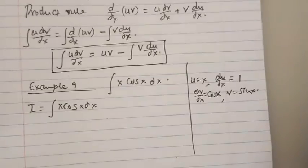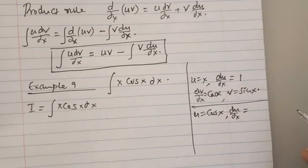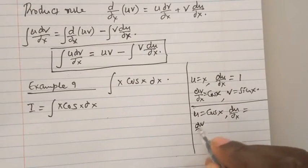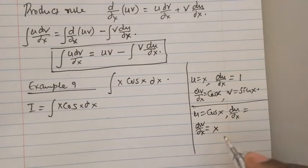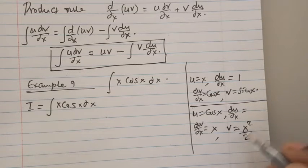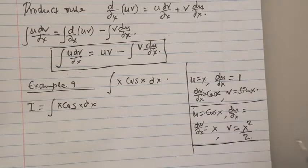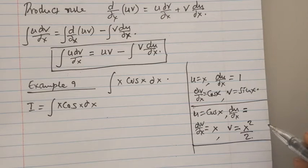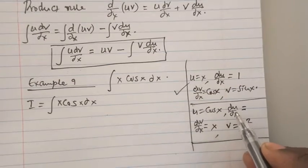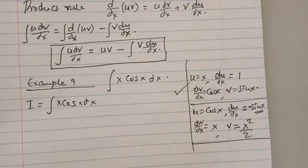But we may choose to let u be cos x. When u is cos x, then dv/dx is supposed to be x, and therefore v is x²/2. The fact that we are going to have a denominator here makes the whole thing a bit complicated, and therefore we may not go this route. So we will go with that first arrangement. At the same time, when we have u as cosine x, then du/dx is negative sine x, and that makes everything a bit complicated. But let's see. Let's use this.